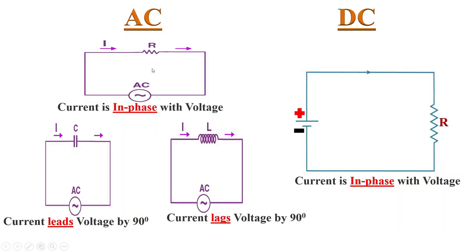In alternating current, if load is resistive, then both current and voltage are in phase with each other. While for a capacitive load, current leads voltage by 90 degrees. For a inductive load, current lags voltage by 90 degrees.